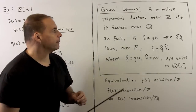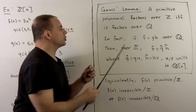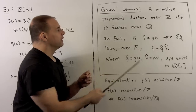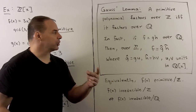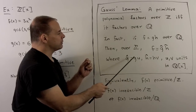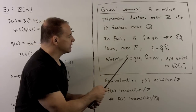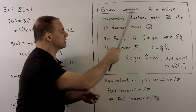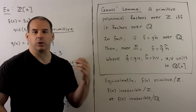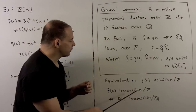The statement of Gauss's Lemma says: a primitive polynomial with respect to the integers factors over the integers if and only if it factors over the rationals. More precisely, if f = g·h over the rationals, then over the integers we can write f = ĝ·ĥ, where ĝ = g·u and ĥ = h·v, with u and v units in ℚ[x] — so we're just rescaling by rational numbers. Another way to say this: if f(x) is primitive over the integers, then f(x) is irreducible over the integers if and only if f(x) is irreducible over the rationals. So here we have a test for irreducibility.